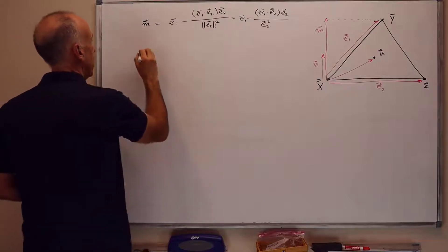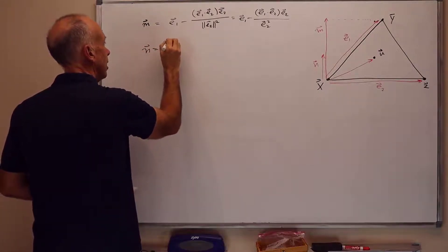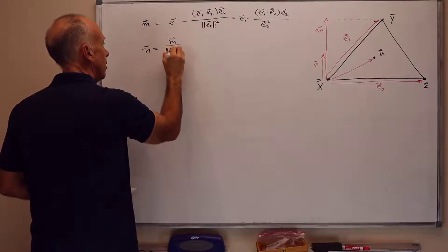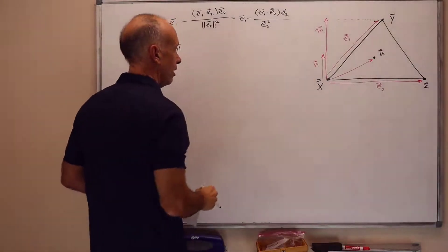And then n is m over the magnitude of m. So that's the unit vector pointing that way.